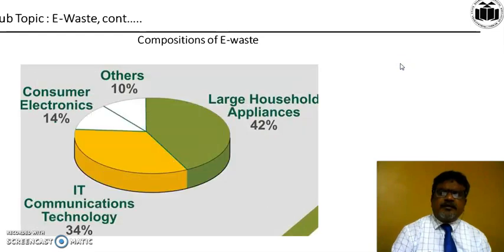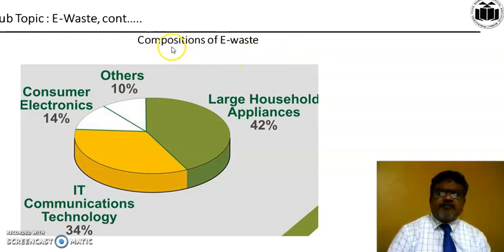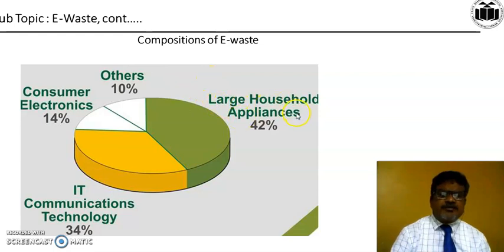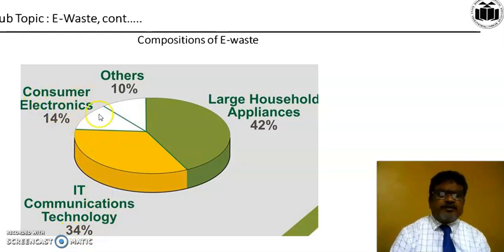Now we have to study the composition of E-Waste. The composition includes large household appliances at 42%, IT and communications technology appliances at 34%, consumer electronics at 14%, and others at 10%.